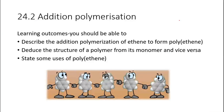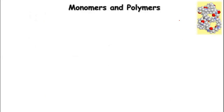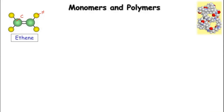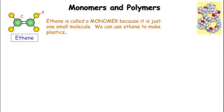Now let's go to subtopic 24.2: Addition Polymerization. Looking at the structure shown, the green color represents carbon and the yellow color represents hydrogen — two carbon atoms and four hydrogen atoms. From the previous chapter, this is ethene: two carbon atoms, one carbon-carbon double bond, and four hydrogen atoms. Ethene is called the monomer — just one small molecule — and we can use ethene to make plastics.